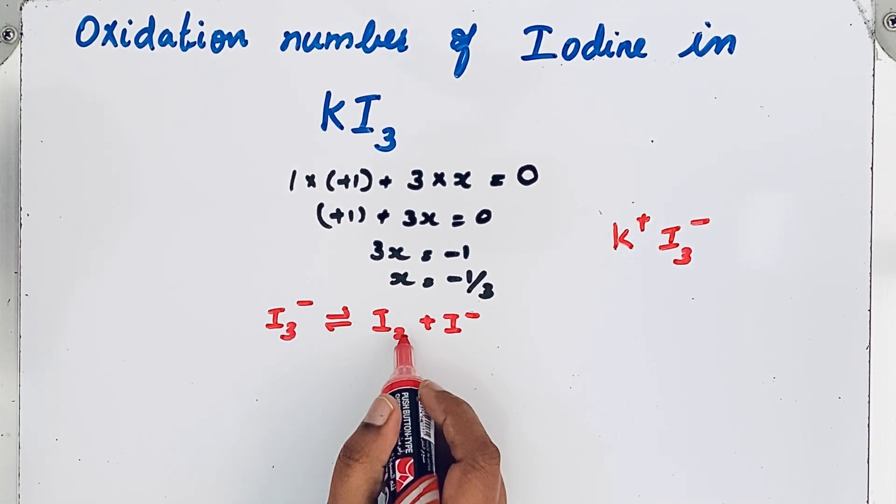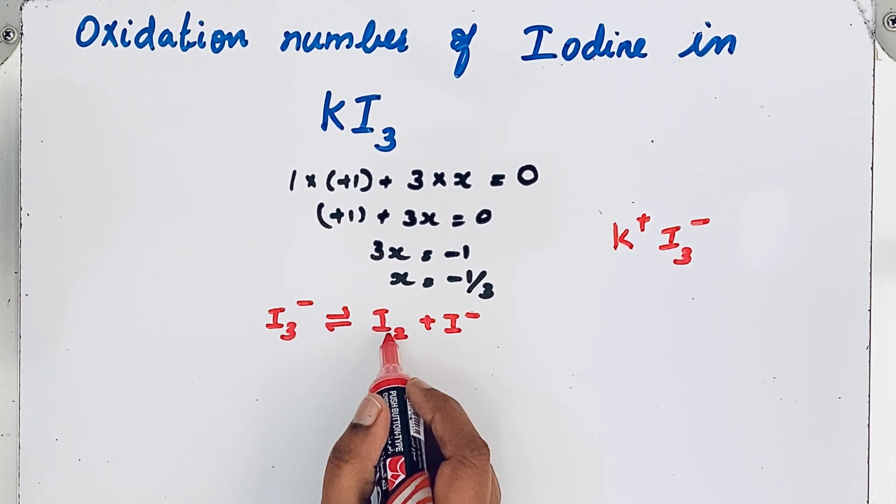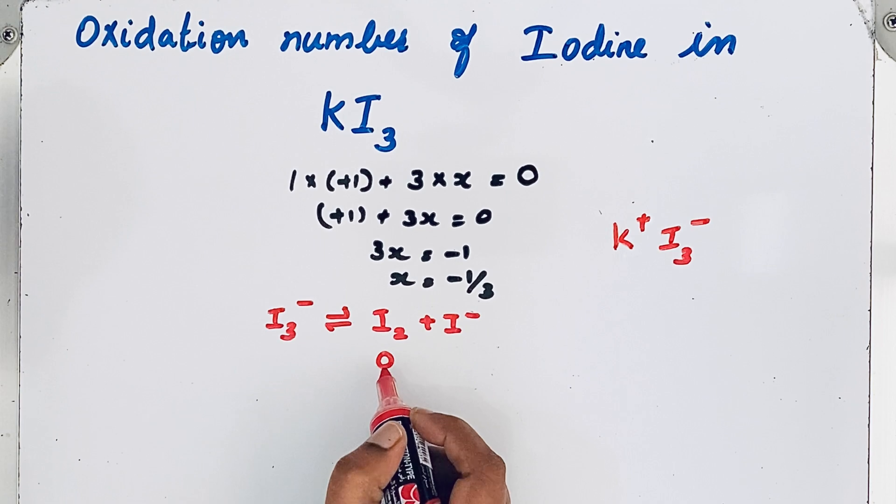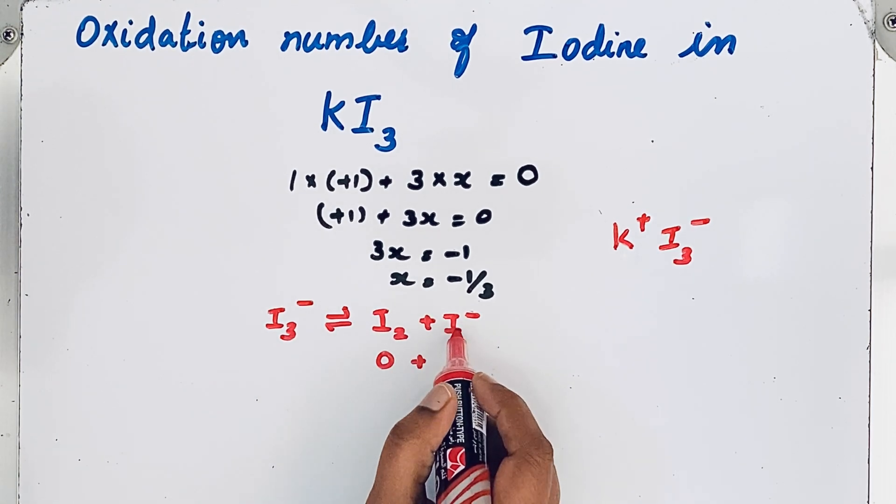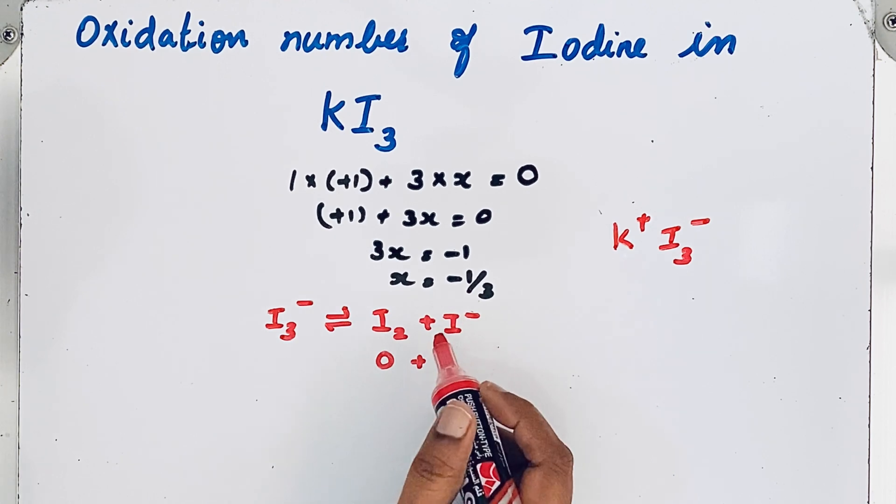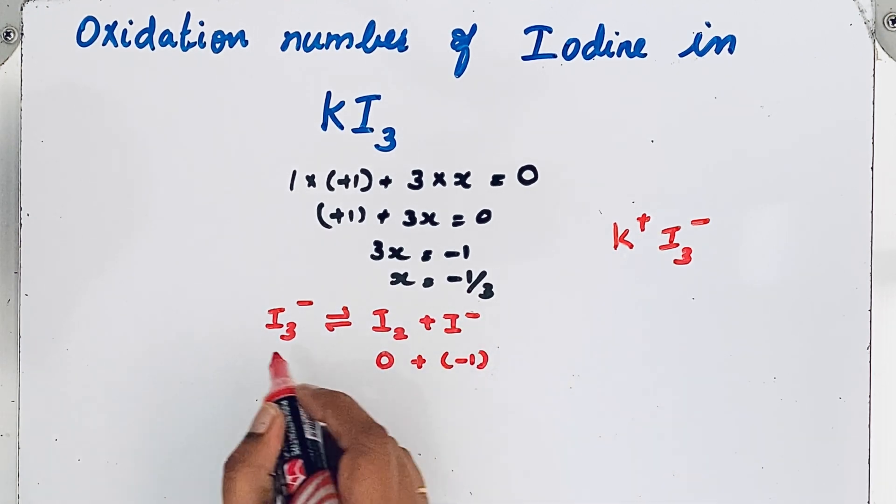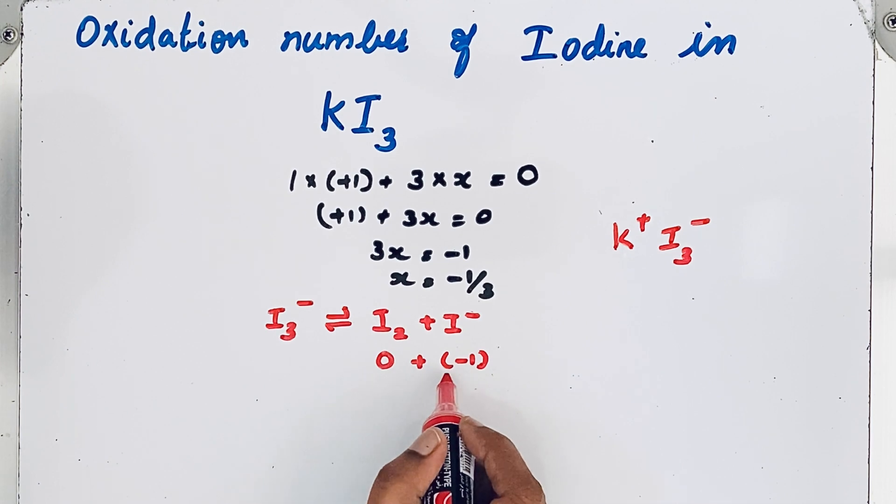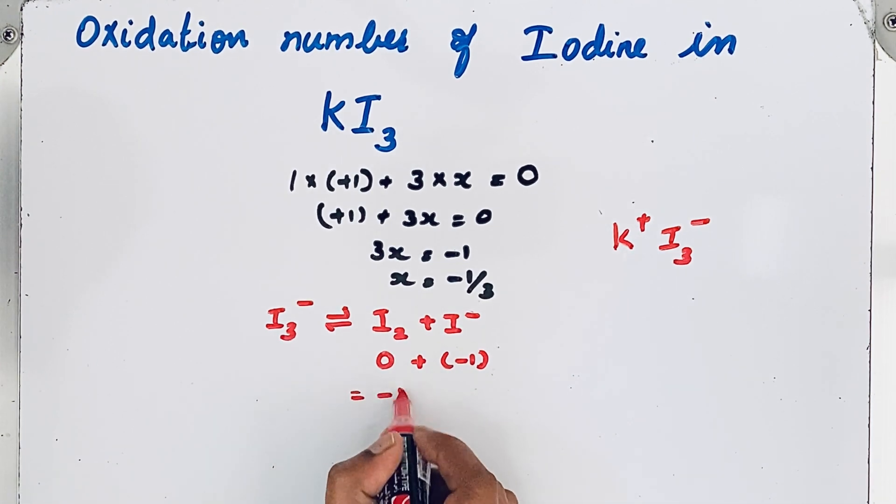According to the rule oxidation number in pure state is 0. So for that iodine molecule the oxidation number is 0. Then it is a monatomic ion. So the charge itself is the oxidation number. So minus 1. So for I₃ minus that oxidation number is minus 1.